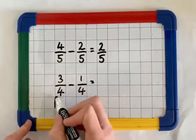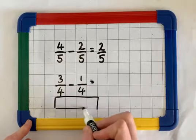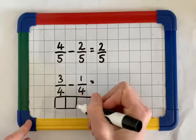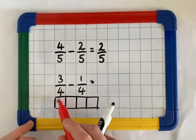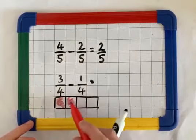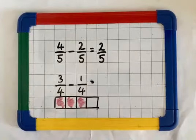Again, I can just show this on bar. Now I've got my whole and split it into 4 equal parts. So I've got quarters. And this time I've got 1, 2, 3 quarters.